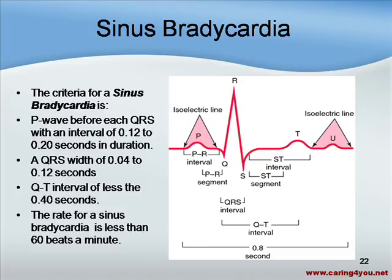For sinus bradycardia, the P-wave, QRS complex, and QT intervals are all the same as normal sinus rhythm, except that the rate is less than 60 beats per minute. That's the only difference between sinus bradycardia on an EKG strip and normal sinus rhythm.